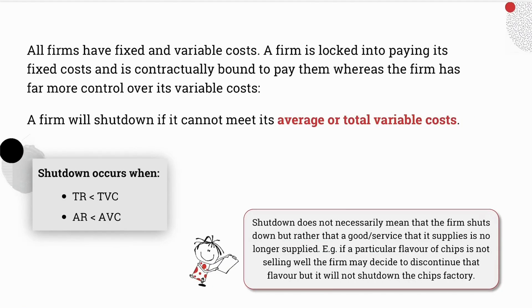We know Grade 12s that all firms have costs. The firm's cost structure consists of fixed and variable costs. The main difference between fixed and variable costs is that the firm is locked into paying its fixed costs. We could actually say that the firm is contractually bound to honor their fixed costs whereas the firm has far more control over their variable costs.